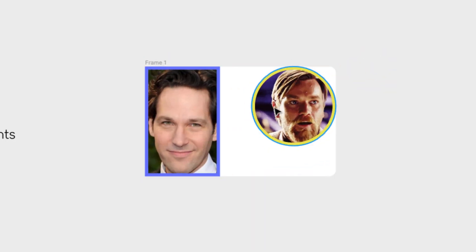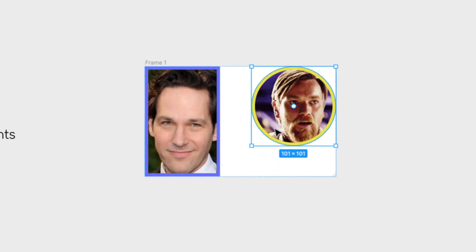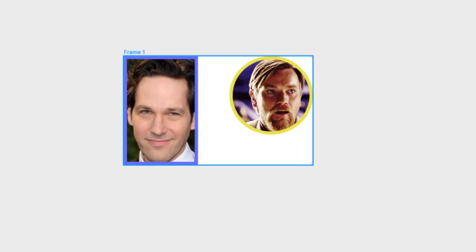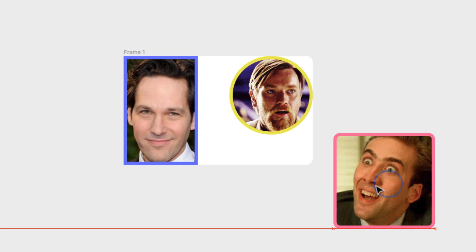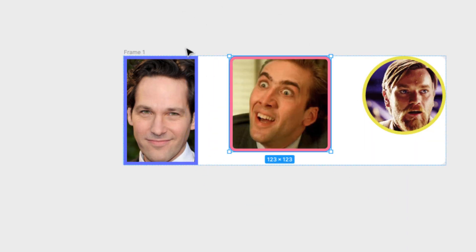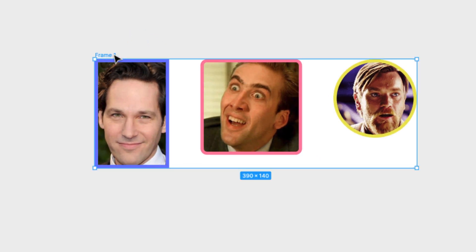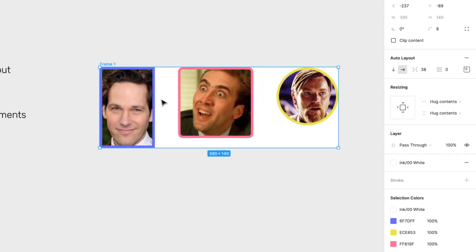Something cool about Auto Layout is that you can move the elements inside it. So you can say, I actually want this on the left, or change your mind and say, I actually want Obi-Wan on the right. Another cool thing is that you can add other elements inside it — Nick Cage appears in the picture — you can actually draw elements inside an existing Auto Layout and it will adapt to the spacing around it. And just talking about spacing, let's change the spacing between these elements and also change the direction.